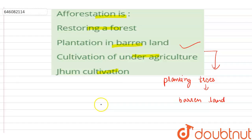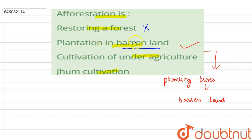Reforestation is increasing the number of trees of an existing forest, but afforestation is the creation of a new forest. So the correct option is plantation in a barren land — it is not particularly the restoration of a forest, but the plantation in a barren land devoid of any trees to create a forest.